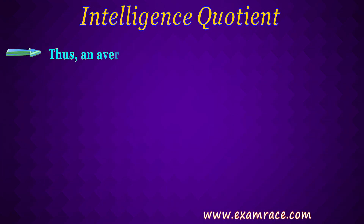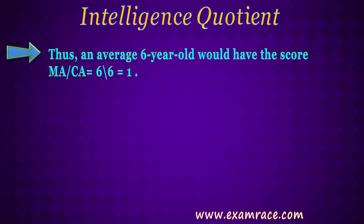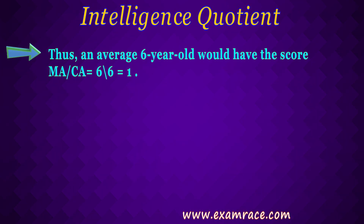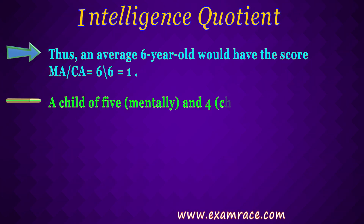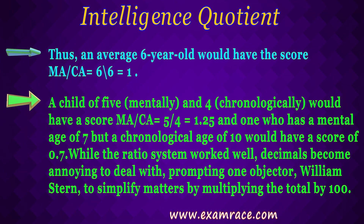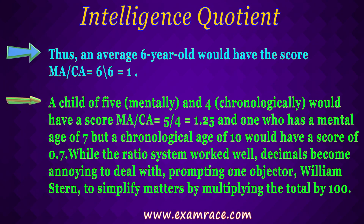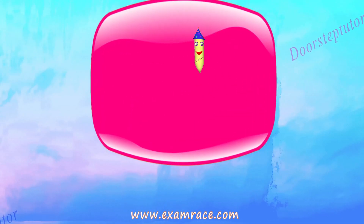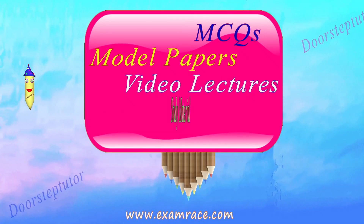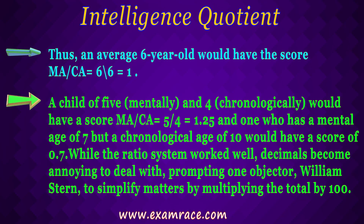Thus, an average 6-year-old child would have the score MA/CA = 6/6 = 1. A child of mental age 5 and chronological age 4 would have a score of MA/CA = 5/4 = 1.25, or one who has a mental age of 7 but a chronological age of 10 would have a score of 0.7.